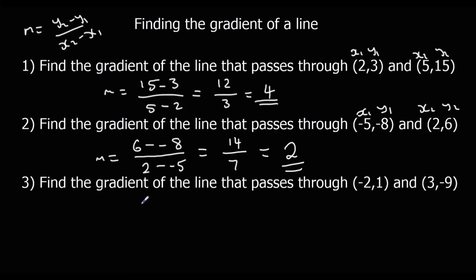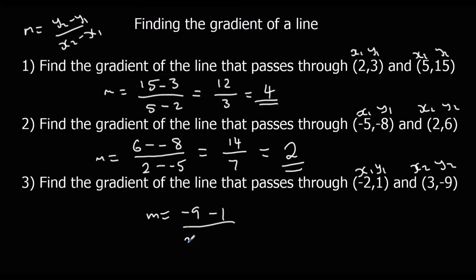And finally, the same formula again. Labelling x1, y1, x2, y2: y2 minus y1 over x2 minus x1 gives minus 9 minus 1 which is minus 10, over 3 minus minus 2 which is 3 plus 2 equals 5. So the gradient of this one is minus 2.